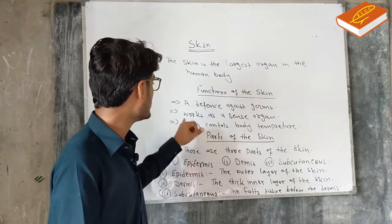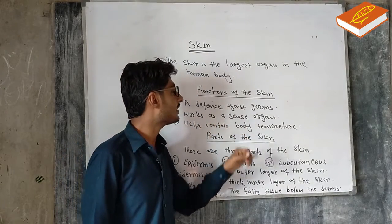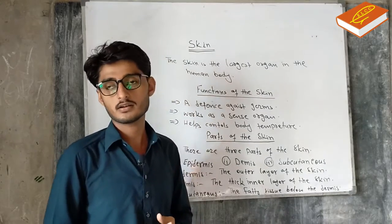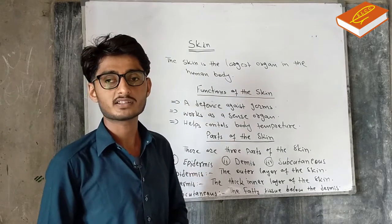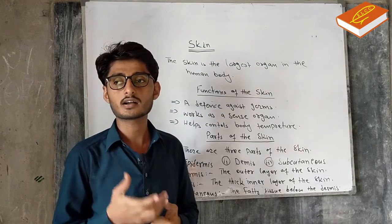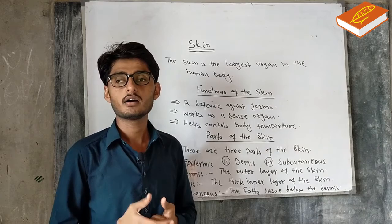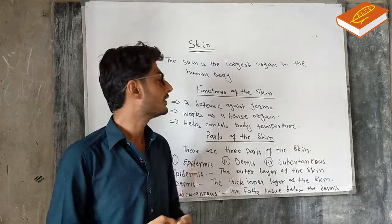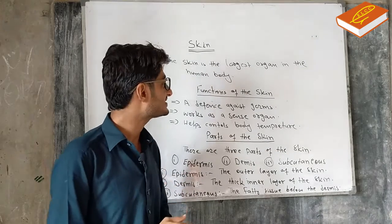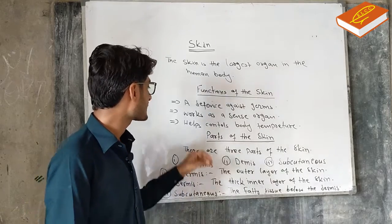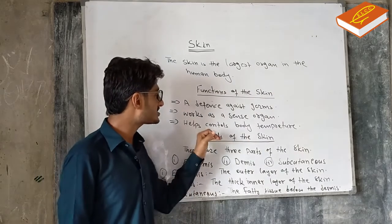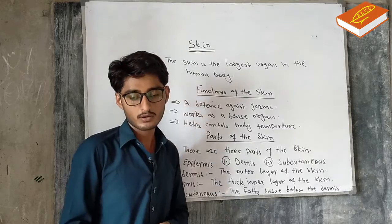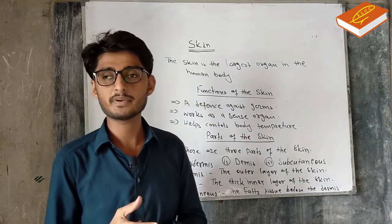Number two, the skin is a sense organ. Our eyes and mouth are also sense organs. Number three, body temperature is controlled by our skin.